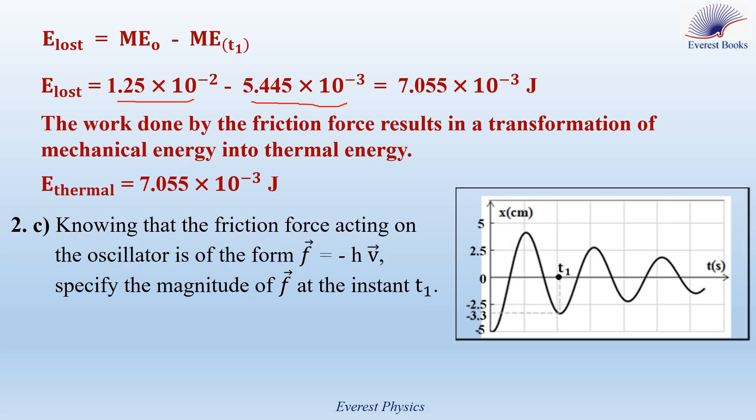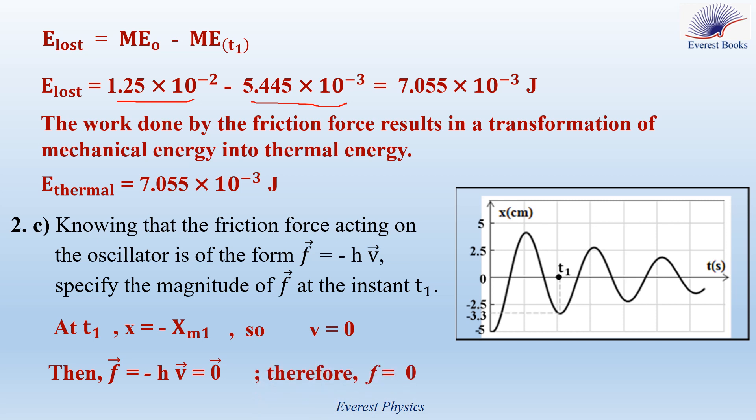Part 2c: Given that the friction force acting on the oscillator has the form F equals −hv, specify the magnitude of F at instant T1. Looking at the graph, at T1 the abscissa x equals −xm1, which is a turning point. At this instant, the speed of the block equals 0. Therefore, using F equals −hv, F equals 0, and its magnitude is also equal to 0.